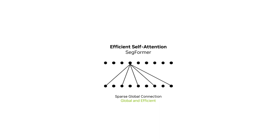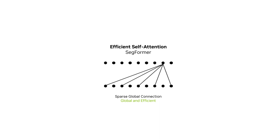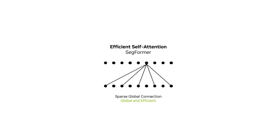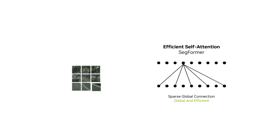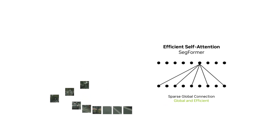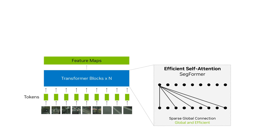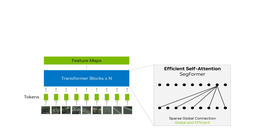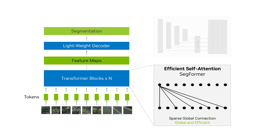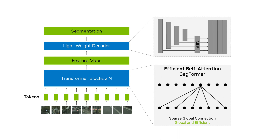Secformer introduces a new efficient self-attention design that achieves both global understanding and high efficiency. The model splits an image into patches, producing multi-resolution features using efficient self-attention. These features are then aggregated through a lightweight decoder to generate the segmentation predictions.